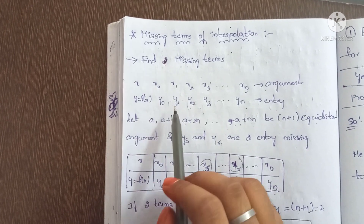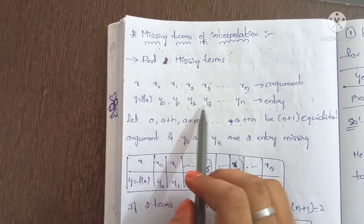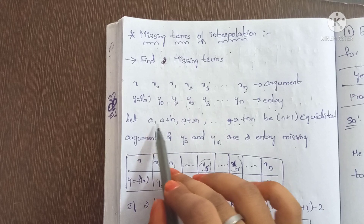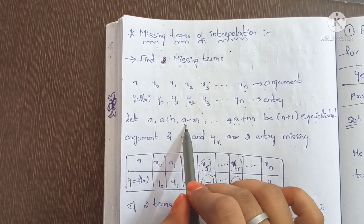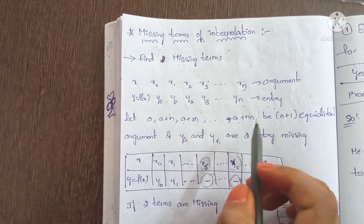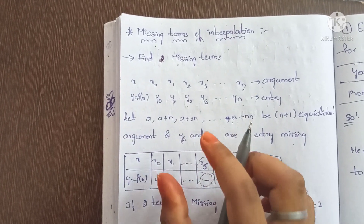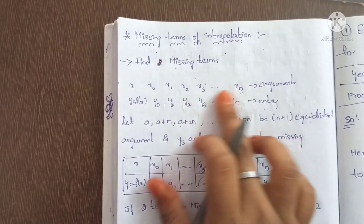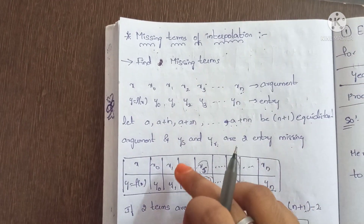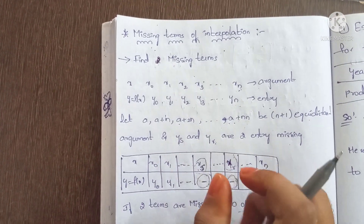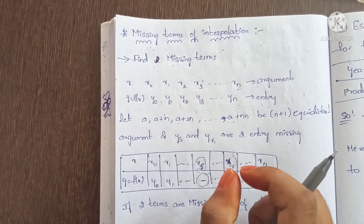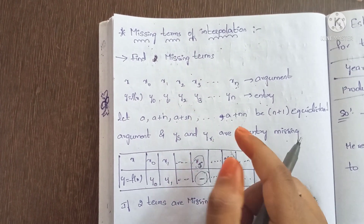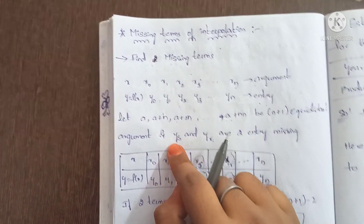y equals f of x, giving y0, y1, y2, up to yn. Let a, a plus n, a plus 2n, up to a plus nn be n plus 1 equidistant arguments. Here ys and yr are the two missing entries.